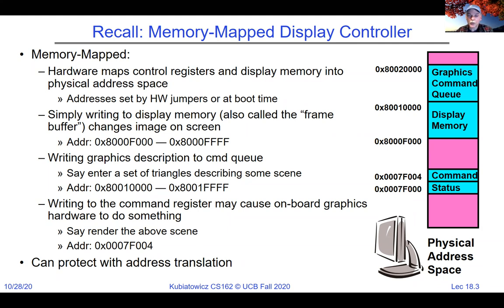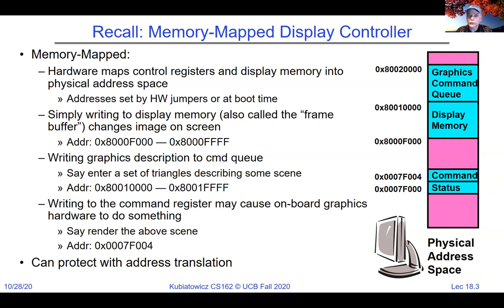With modern buses such as PCI and USB, there's an automatic negotiation that happens for the actual absolute values of the addresses, just to make sure that the physical addresses of the devices don't overlap. We call that memory-mapped I/O.